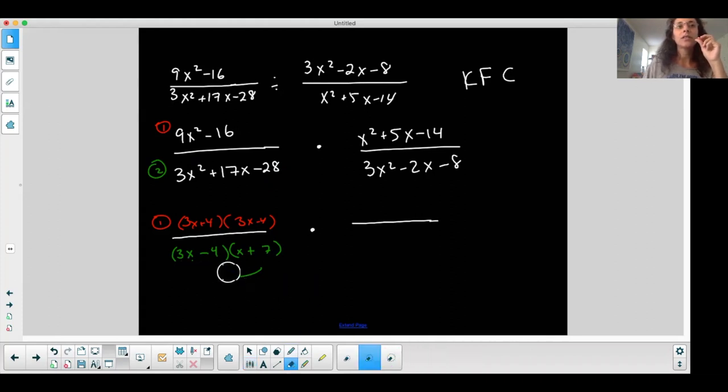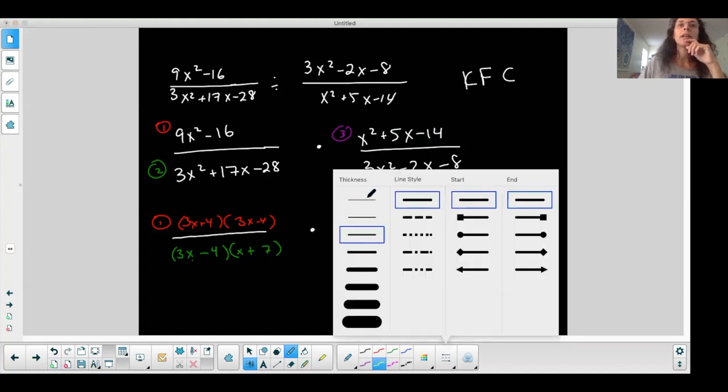So I'm going to get rid of this. And factor my next situation, which is over here, polynomial number 3 we'll call it. Which is a lighter factoring situation. An x and an x. Two numbers that multiply to give me 14. That adds to give me 5. So I want it to be negative 14 and a positive 5. So a plus 7 and a minus 2.